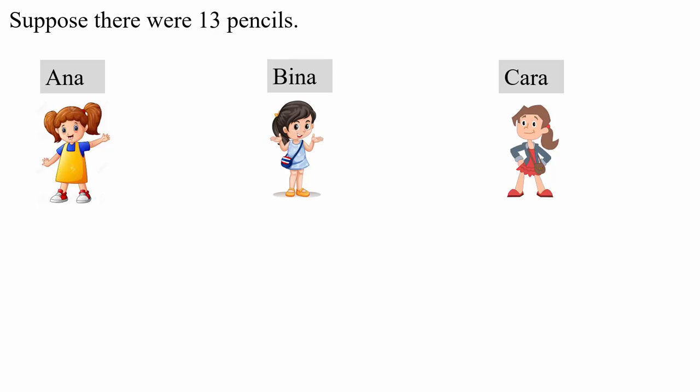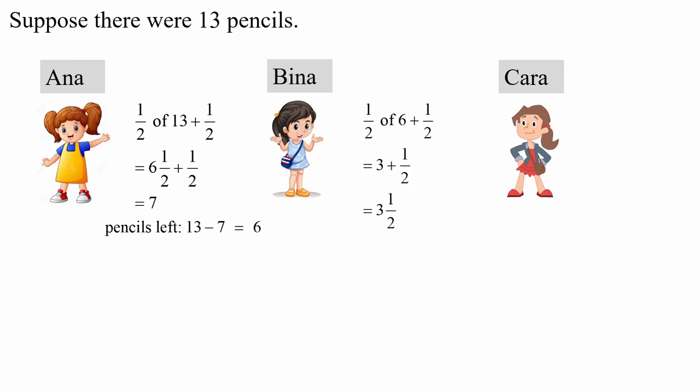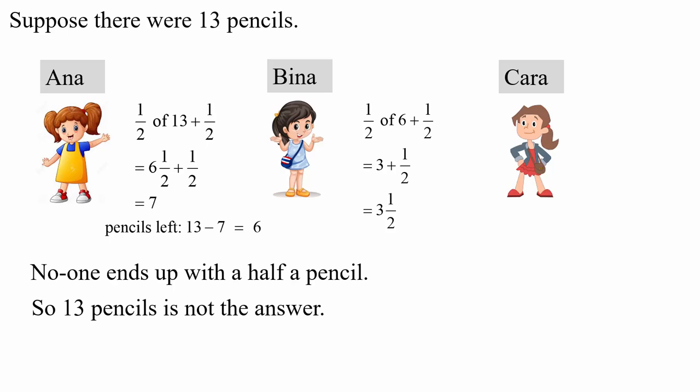What about if we started with 13 pencils? Anna will receive half of 13 plus another half, which comes out to be seven pencils. This sounds more promising, doesn't it? What about Bina? Well, if Anna receives seven pencils, there are six pencils remaining. So Bina will receive half of six plus another half, which is three and a half pencils. But again, Bina seems to have violated the rule that we can't have half a pencil. So we conclude that 13 is not an answer.